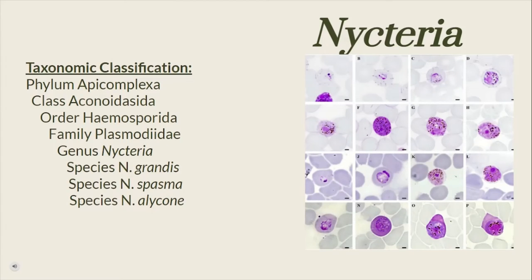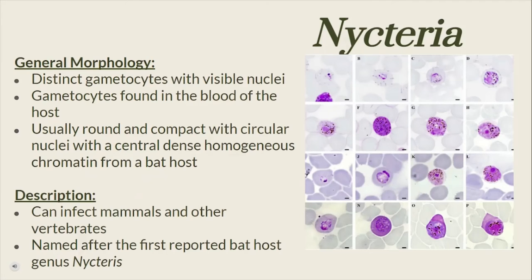On this slide we will find the taxonomic classification for Nycteria. The gametocytes can be seen in the image found in the blood of its hosts. The gametocytes of Nycteria found from a bat host are usually round and compact with circular nuclei and a central dense chromatin. Nycteria is a parasite that can infect mammals and other vertebrates, but is most prevalent among African insectivorous bats, where they feed on its blood. The name came from the first reported bat host genus, which is Nycteris.